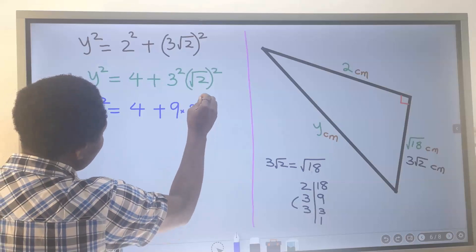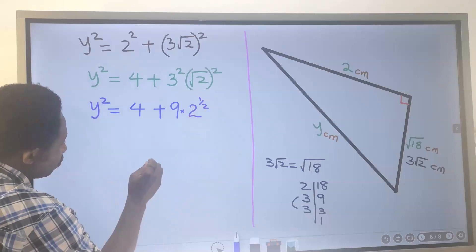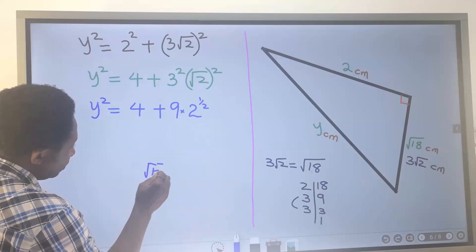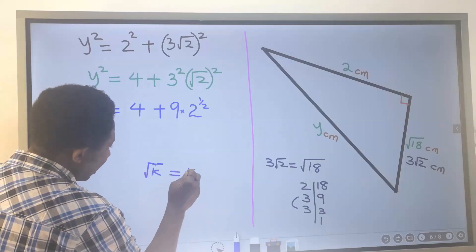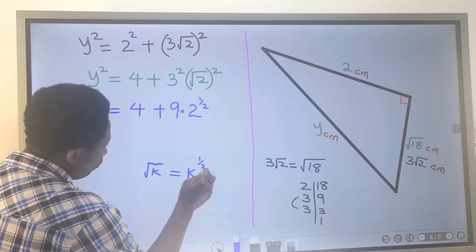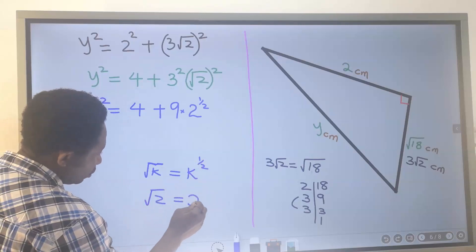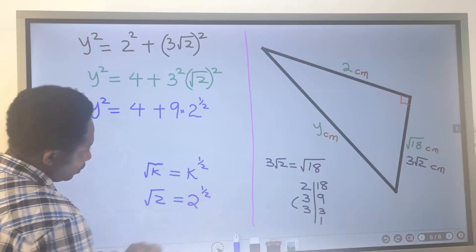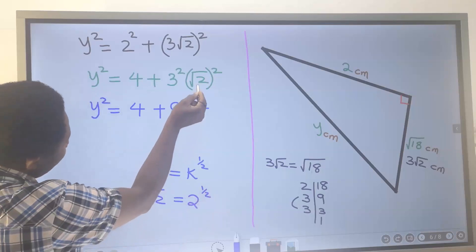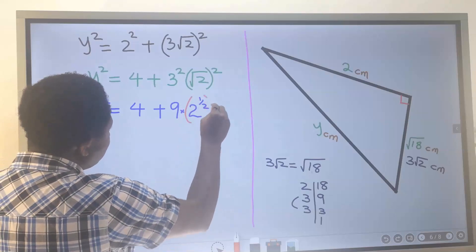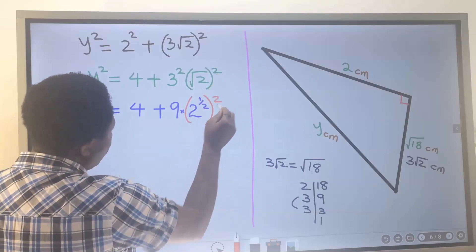This is y² and here is 4 plus this is 9, and it will multiply. This is the same thing as 2 to the power of 1/2. The square root of any number or variable is the same thing as that variable to the power of 1/2. The square root of 2 is the same thing as 2 to the power of 1/2, and this got squared. Next, this 2 will take away this 2 and we are left with 2.